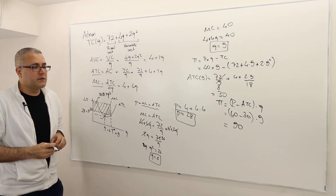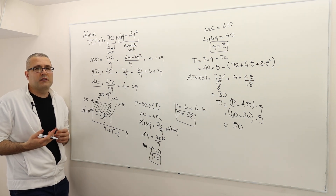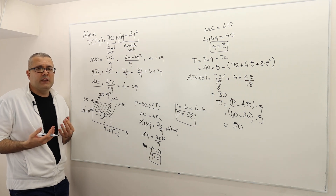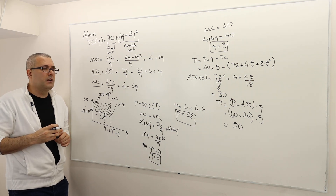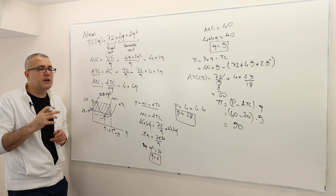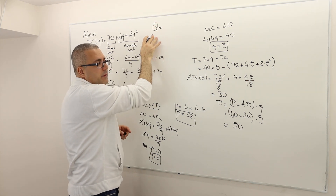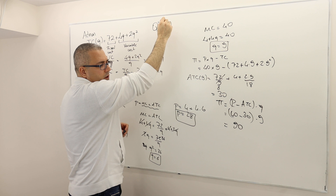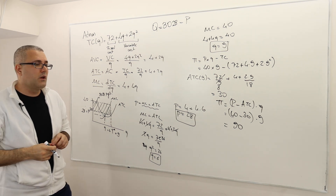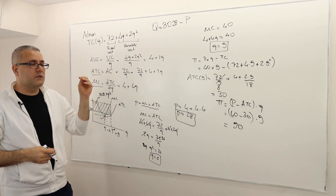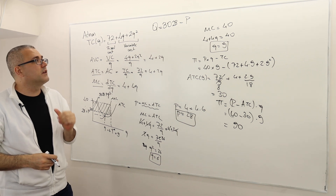Part D: The market demand for dolls is given by Q = 3028 − P, where Q is total dolls sold in the city per day and P is the market price. Up until now we didn't need the market demand, but now we want to find the number of operating firms in the long run. In the long run, how many stores will be in the dolls business in Toronto?